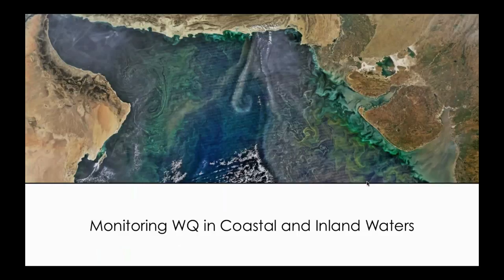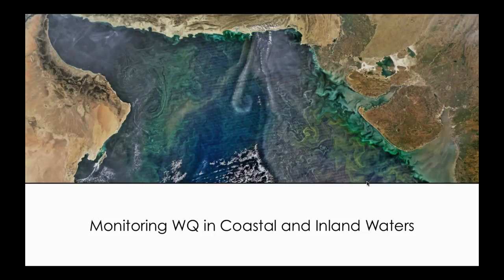This is an overview of satellites and sensors used for water quality monitoring and the basic concept of what is required for getting quantitative information from remote sensing — how to derive an algorithm, how to use in-situ data in combination with remote sensing data to derive water quality parameters. Now we are going to focus on monitoring water quality in coastal and inland waters.